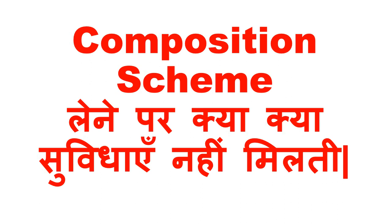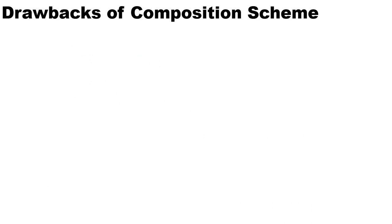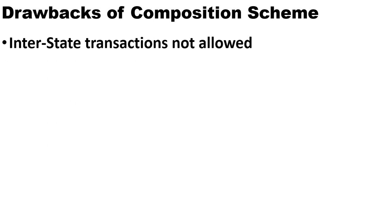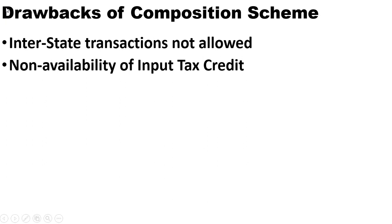Let's see the drawbacks of the composition scheme. The first drawback is that you can't do interstate transactions. If you want to expand your business and sell in other states, you won't be able to do that if you have opted into the composition scheme.